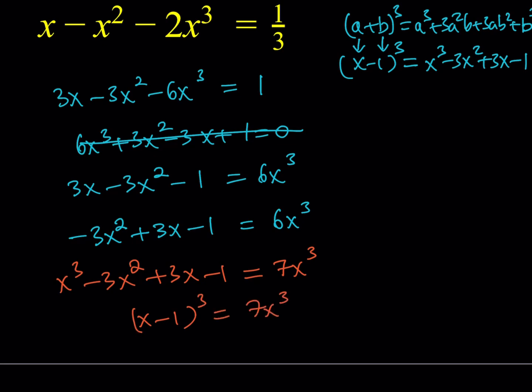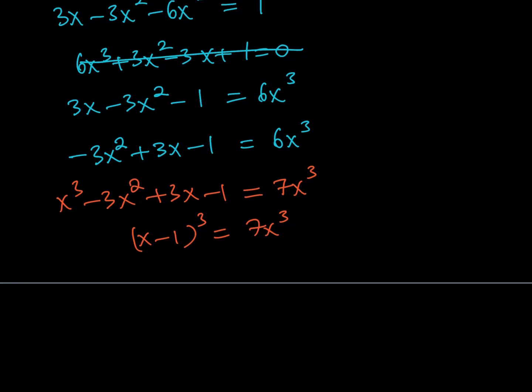Now, what am I going to do next? Well, I have something cubed on the left-hand side, and on the right-hand side I have the same thing, or something similar. Well, how do you write it? We can write the 7x cubed as the cube of something, can't we? We can write it as the cube root of 7 multiplied by x quantity cubed. There you go.